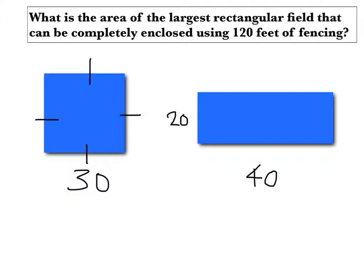So this square has a total of 900 square feet of area enclosed, and this rectangle has 800 square feet of area enclosed.